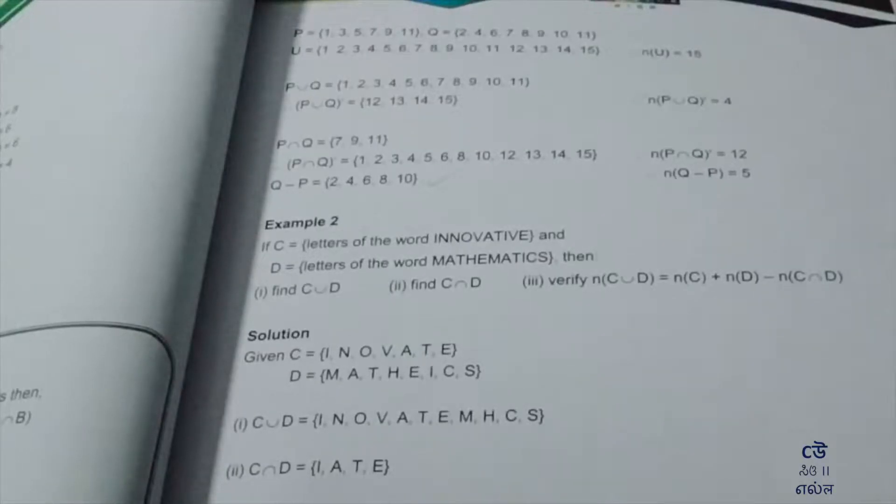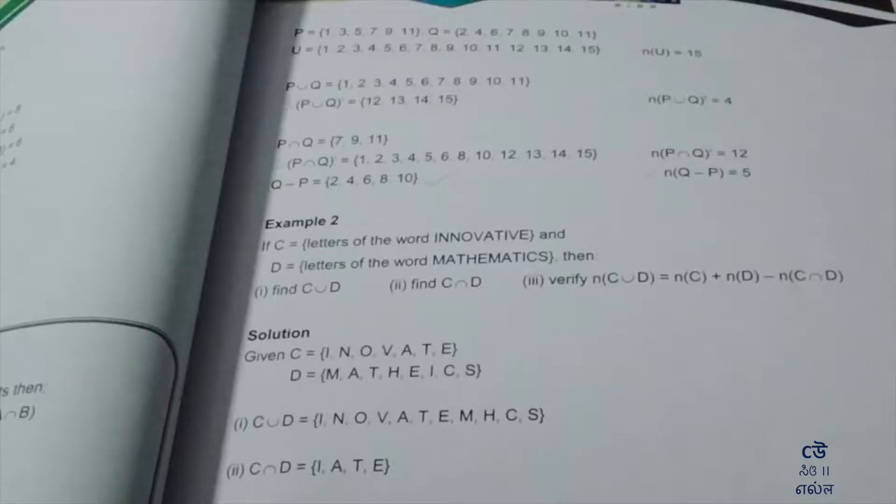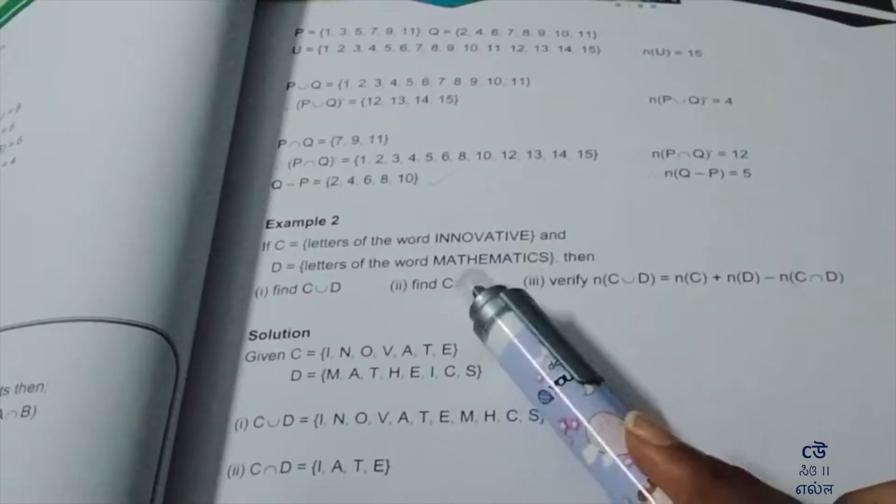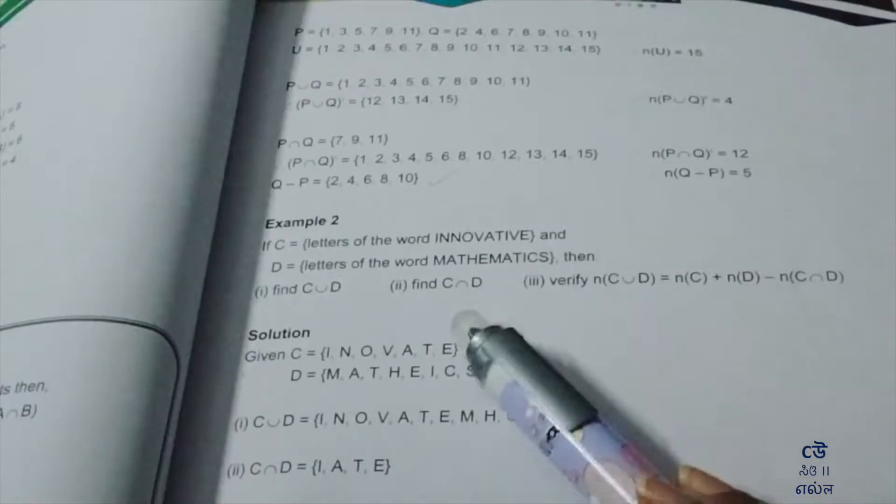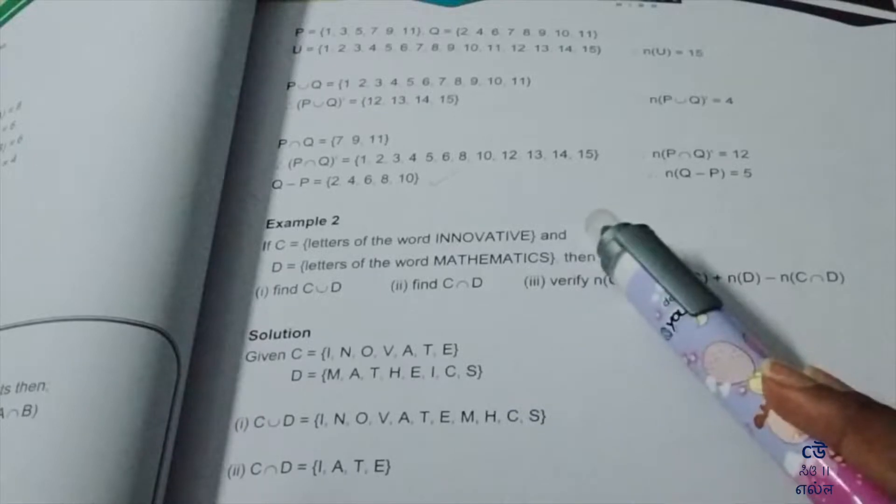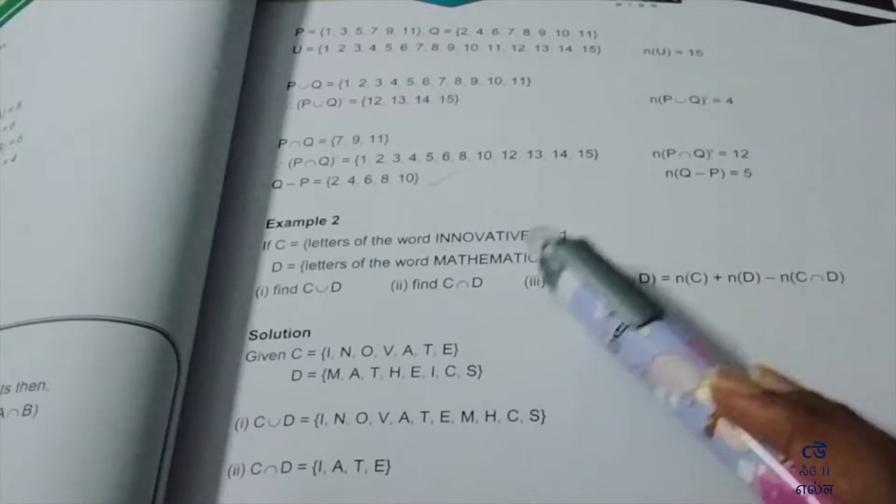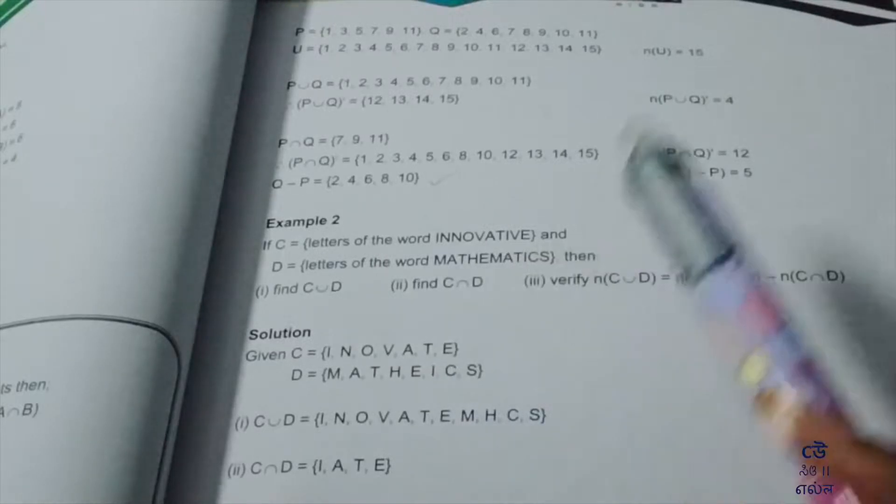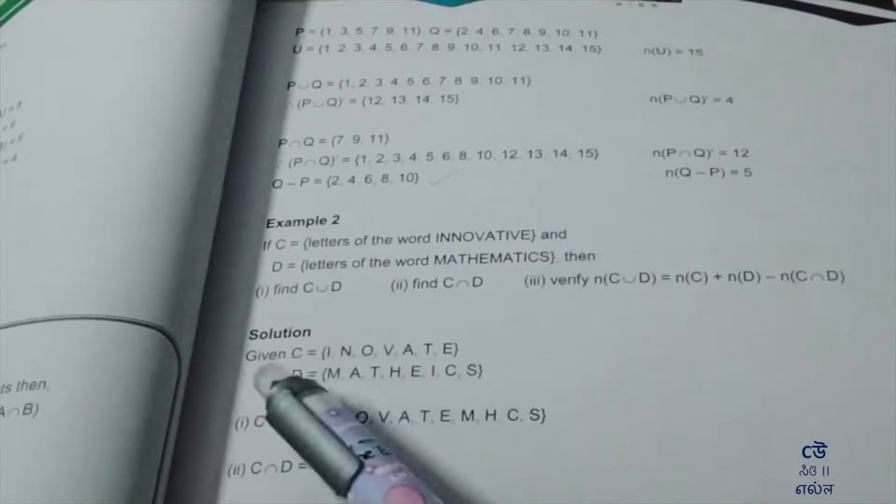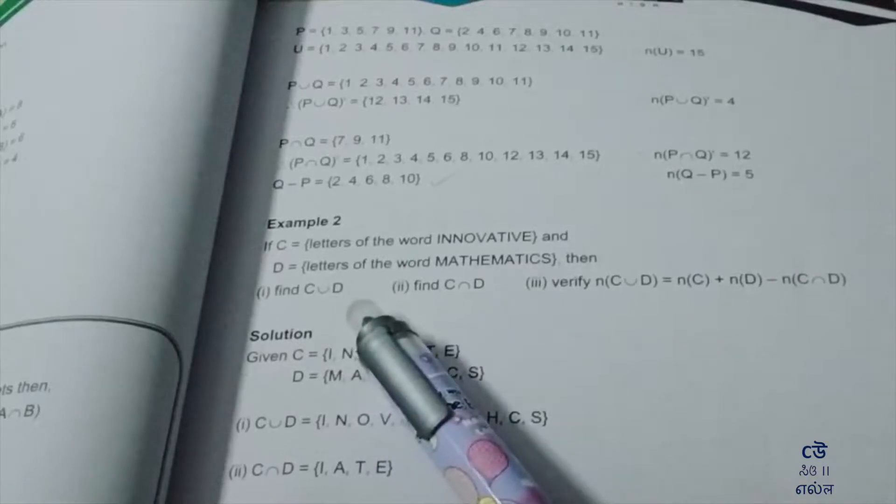The second example: C is the letters of the word INNOVATIVE. There's a spelling correction - it's I-N-N-O-V-A-T-E. And D is the letters of the word MATHEMATICS. Then C union D.